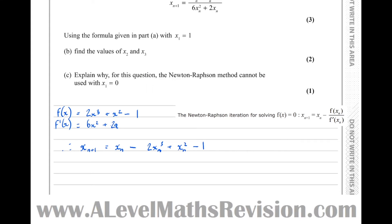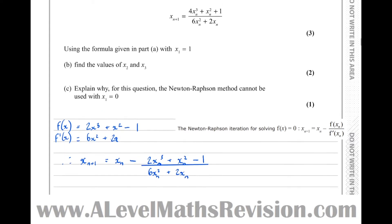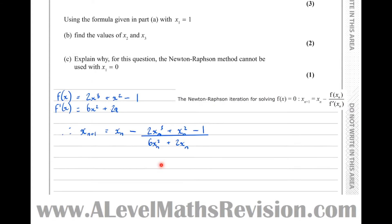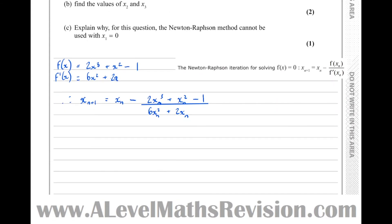All over f dash xn, which is 6xn squared plus 2xn. Notice that isn't yet what we've been asked to find, but notice that this is a single fraction, whereas this is two separate terms, so we need to combine this into a single fraction now.